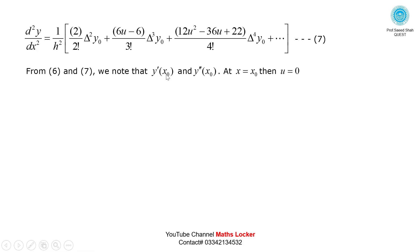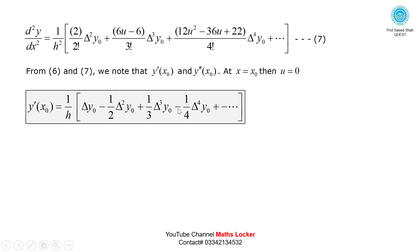From equations 6 and 7, we note that at x = x₀, u = 0. Substituting u = 0, terms simplify: 2/(2!) = 1, and -6/(3!) terms reduce accordingly. The first derivative formula becomes: y'(x₀) = (1/h)[delta y₀ - (1/2)delta² y₀ + (1/3)delta³ y₀ - (1/4)delta⁴ y₀ + ...]